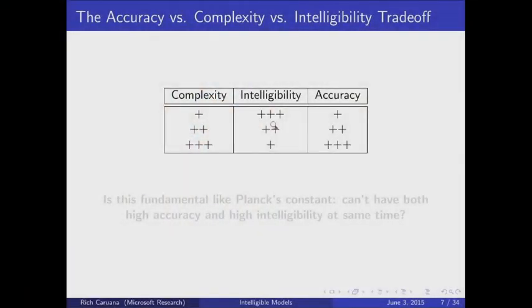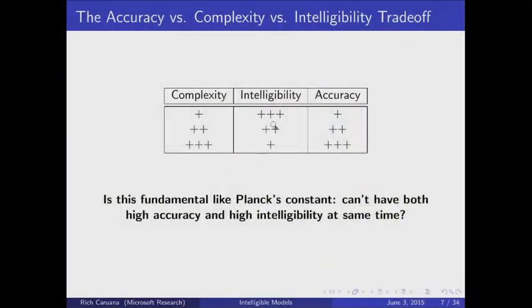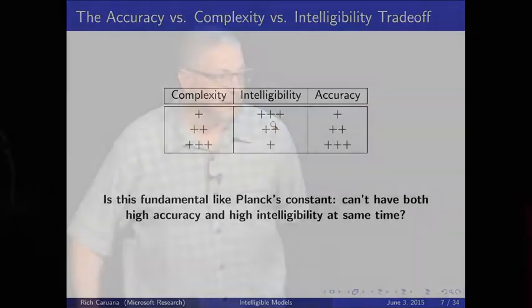Maybe there's a trade-off: models can be low complexity, high intelligibility, but unfortunately low accuracy. Or the trade-off runs the other way — high complexity, high accuracy, but at the expense of intelligibility. Maybe it's something very fundamental, like Planck's constant — you can't know an electron's momentum and position accurately at the same time. Maybe you can't have high accuracy and high intelligibility at the same time. Hopefully we'll see that actually this isn't true.